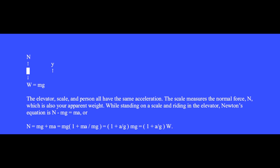While standing on a scale and riding in the elevator, Newton's equation gives N equals Ma plus Mg. We factor out Mg and write this as Mg times (1 plus A over G). Then we cancel the M to have (1 plus A over G) times Mg, but Mg is your normal resting weight W. So we have N equals (1 plus A over G) times W. Our apparent weight N is the multiple of our usual resting weight W.